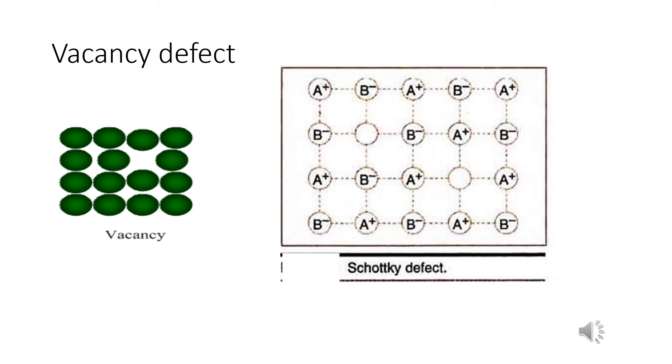The existence of two vacancies, one due to missing Na+ ions and other due to missing of Cl- ions in a crystal of sodium chloride. So, the crystal as a whole remains neutral because the number of missing positive and negative ions is same.